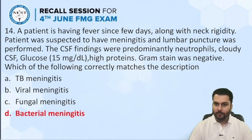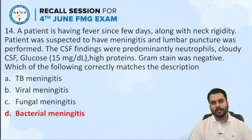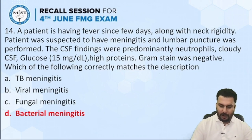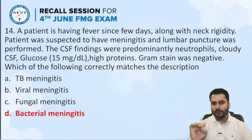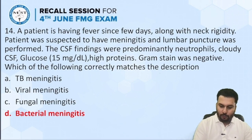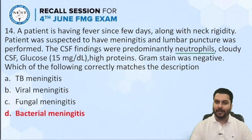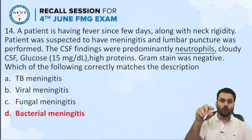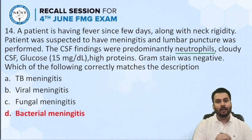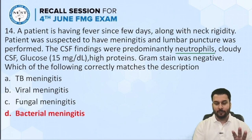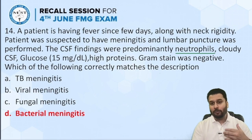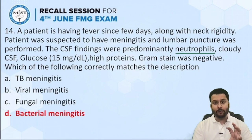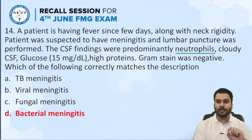Next unit: bacteriology. A patient has had fever for a few days along with neck rigidity — many of you have diagnosed this as meningitis. LP was performed and CSF findings showed predominantly neutrophils. Almost all students said neutrophils were clearly given, and because neutrophils were given we should think bacterial meningitis. To confirm further: cloudy CSF, low glucose — bacteria consume glucose making it less — and high proteins. Gram stain was negative, which sometimes happens in CSF samples. The correct answer is bacterial meningitis.